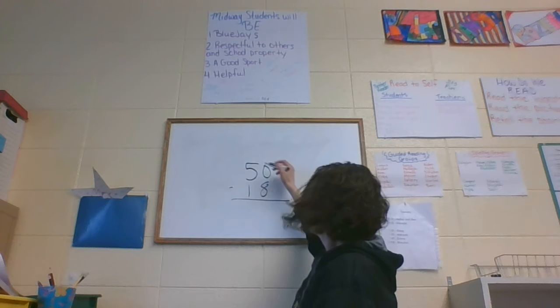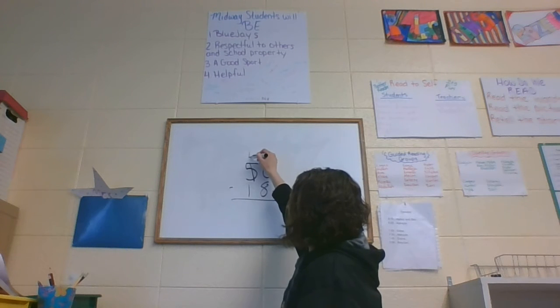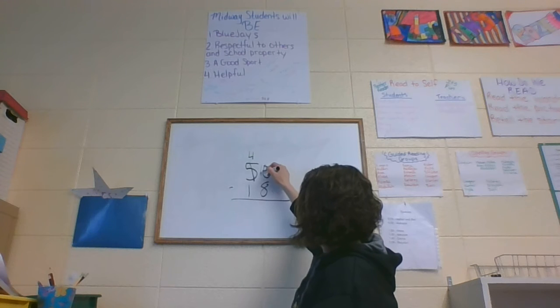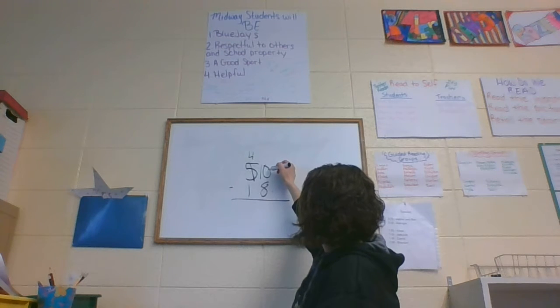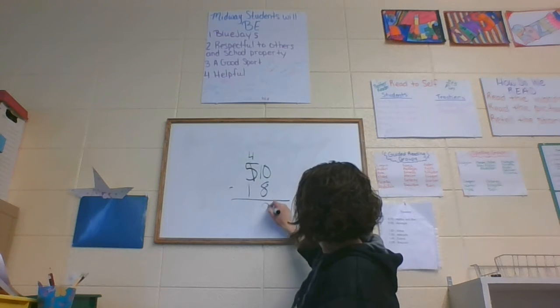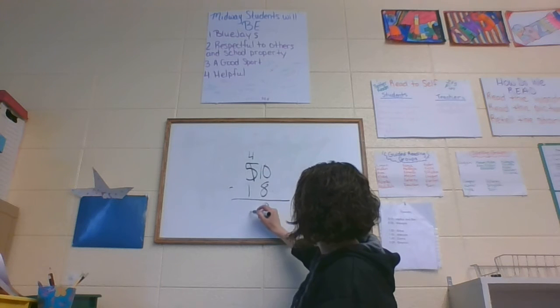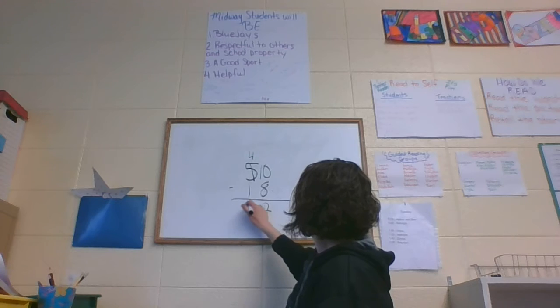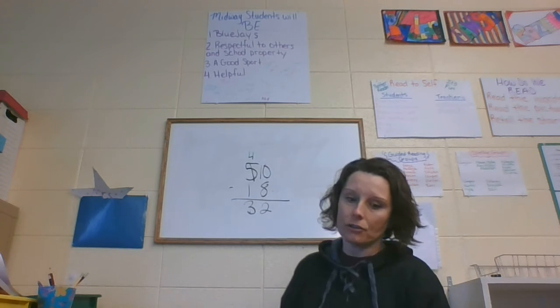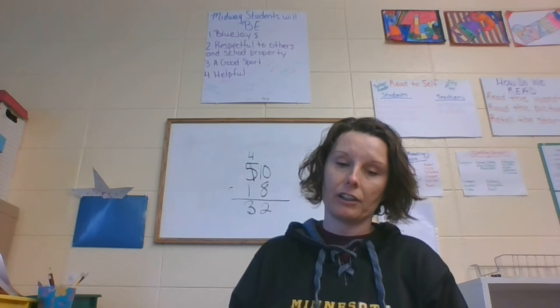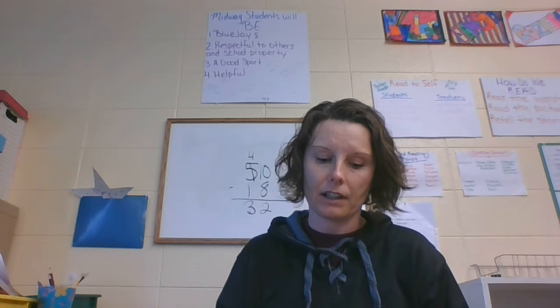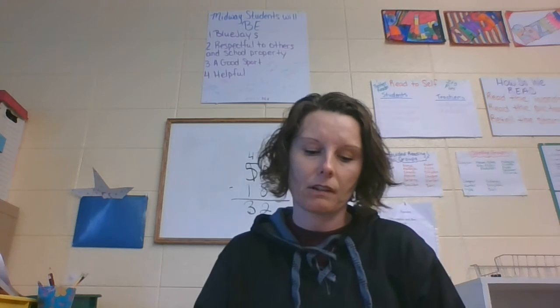There's more on the floor. Go next door. Borrow 10 more. 5 becomes a 4. 0 becomes a 10. 10 minus 8 is 2. 4 minus 1 is 3. 32. So you should have written down 32. And what does she have? Paper clips.